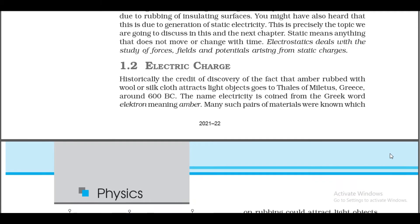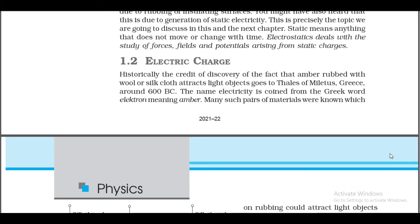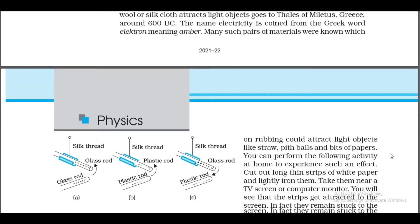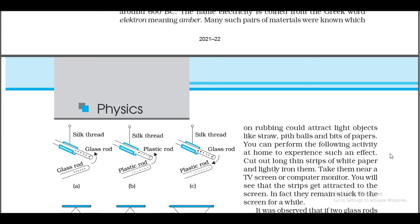1.2 Electric Charge. Historically, the credit of discovery of the fact that amber rubbed with wool or silk cloth attracts light objects goes to the philosopher of Miletus, Greece, around 600 BC. The name electricity is coined from the Greek word 'electron' meaning amber. Many such pairs of materials were known which on rubbing could attract light objects like straw, pith balls, and bits of paper.